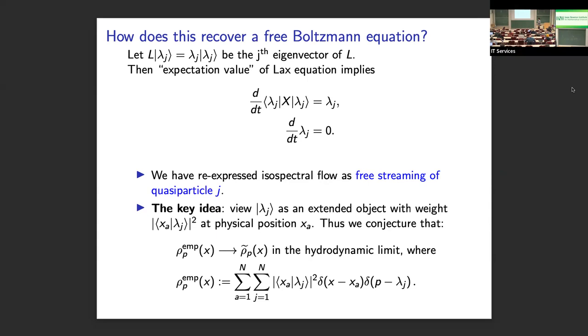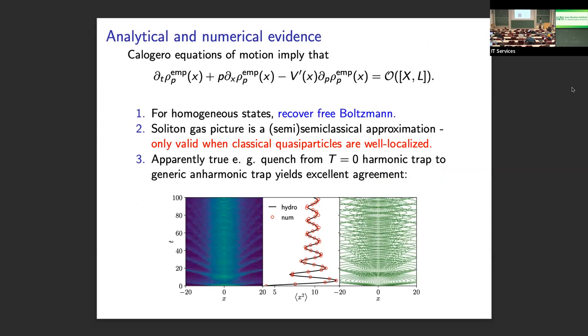So we eventually realized that the correct thing to do is to continue to view the eigenvector as an extended object with weight, depending on the physical position, but to actually use this weight just as a coefficient in a genuinely local distribution function. So that led to this conjecture for what the empirical distribution function should be for the Calogero model. And it's really this amplitude for a classical quasi-particle to be at site X, summed over these delta functions specifying position X and momentum lambda.